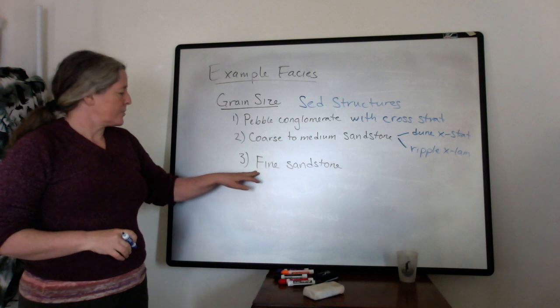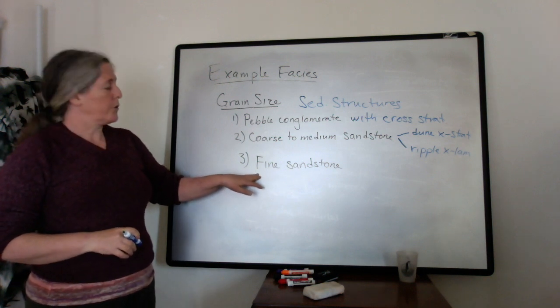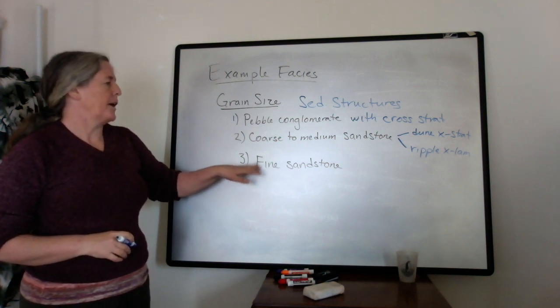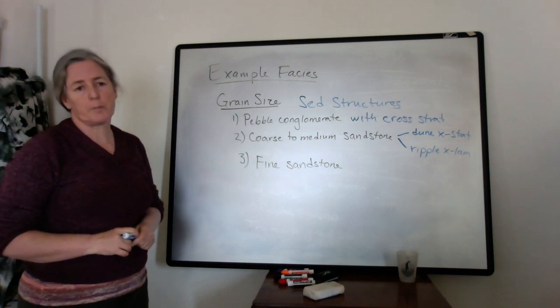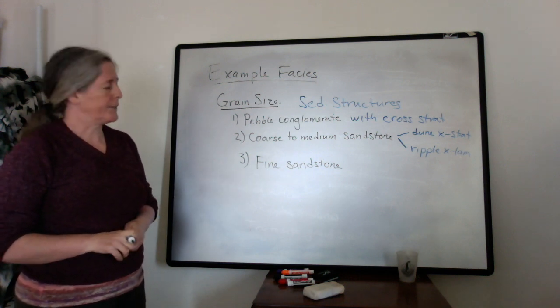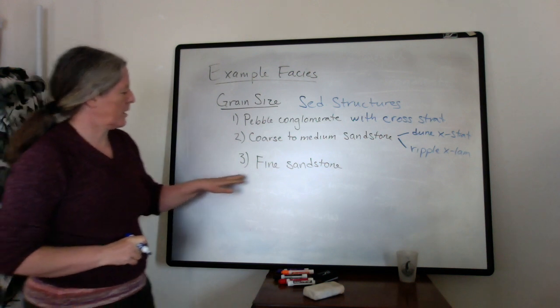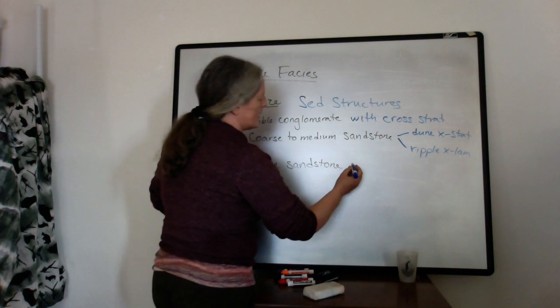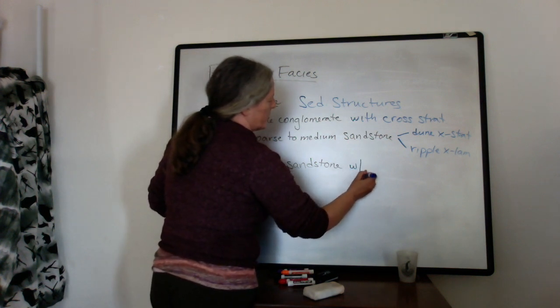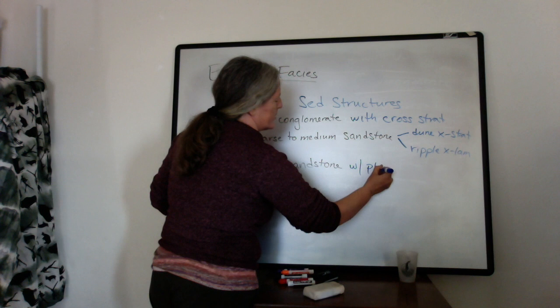The fine sandstones, we talked about those as having a lower flow speed and they don't typically have dune cross stratification. It's usually ripple cross lamination or upper planar lamination. So I'm going to say that the flow speed is low, so this would be with planar lamination.